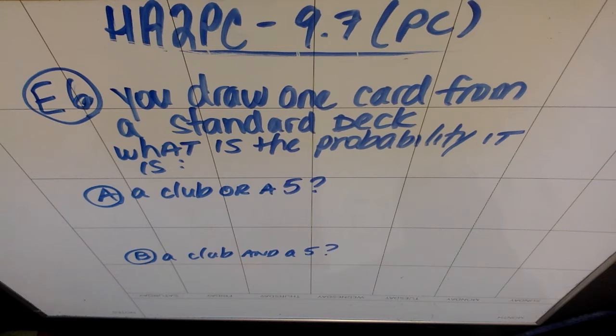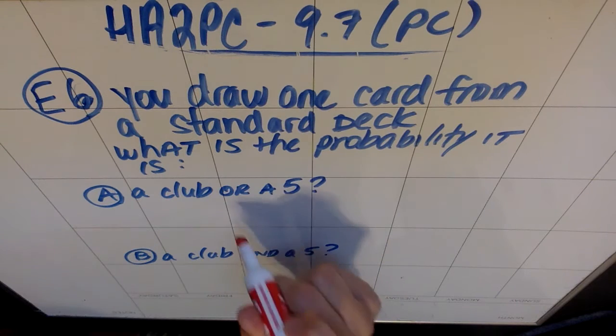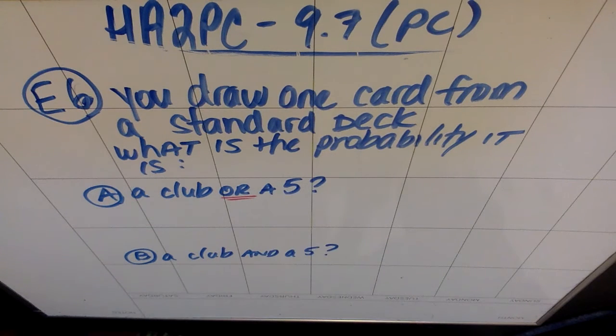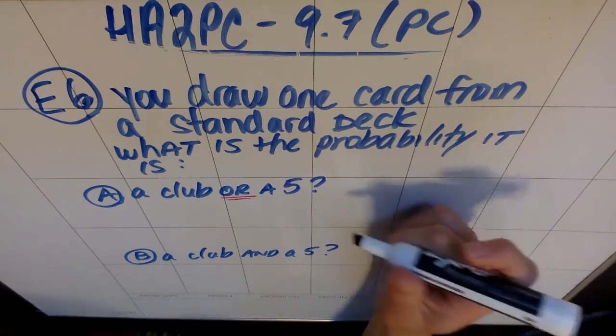For part A, what's the probability it is a club or a 5? So one way to do this when we have that 'or'... The idea that we're looking at here is there's a few ways to do this.